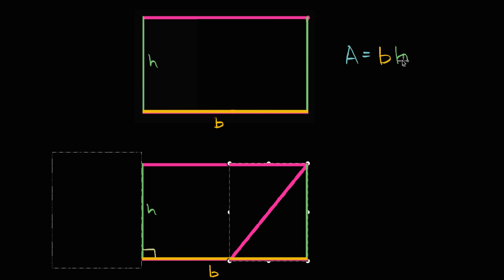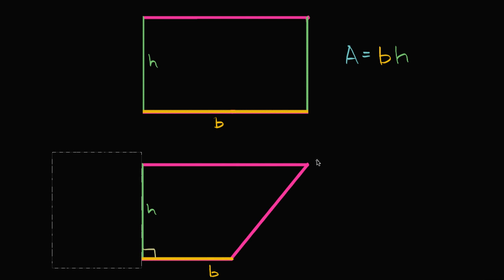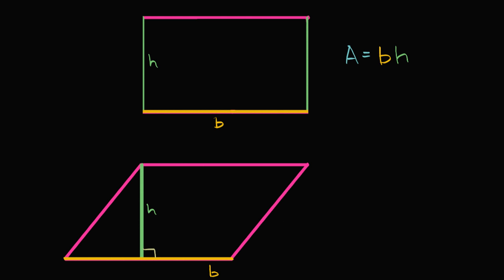It's still going to be base times height. So hopefully that convinces you that the area of a parallelogram is base times height, because we're now going to use that to get the intuition for the area of a triangle.